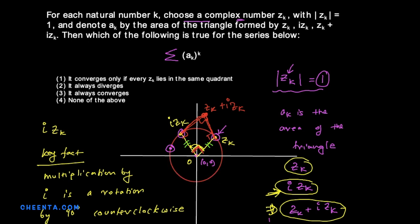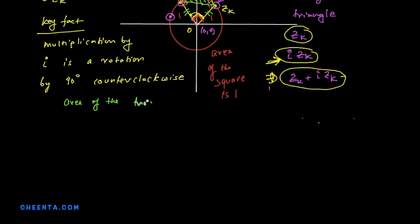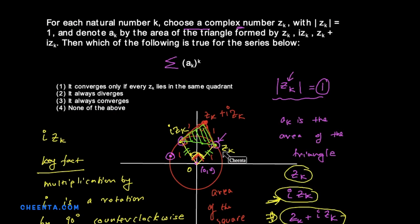Okay, so it's a square with side length one, because the radius of the circle is one. So area of the square is one. But we are not interested in the area of the square. We are interested in the area of this triangle. Let me draw that in green and maybe shade it, which is exactly half the area of the square, which means area of the triangle is just half. Notice that this is true no matter how you choose zk. This area of the triangle is always half.